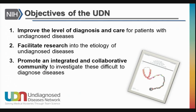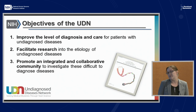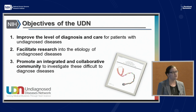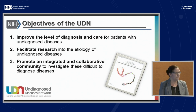For the Undiagnosed Diseases Network, we have three main objectives. The first is to improve the level of diagnosis and care for patients that have undiagnosed diseases. The second is to facilitate research on those conditions that had been previously undiagnosed. And third, we really want to create and promote an integrated and collaborative community bringing together both researchers and clinicians, bioinformaticians, and everyone involved in the research and clinical care of these participants.